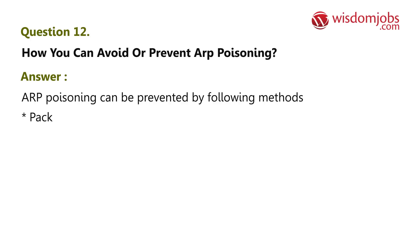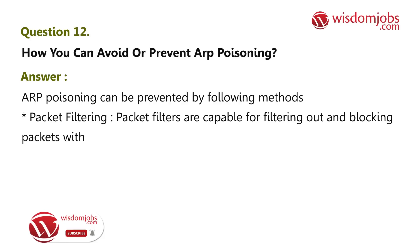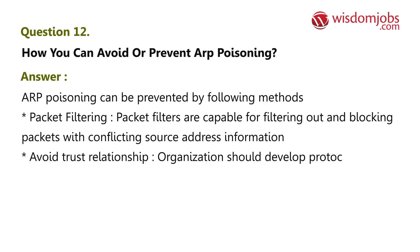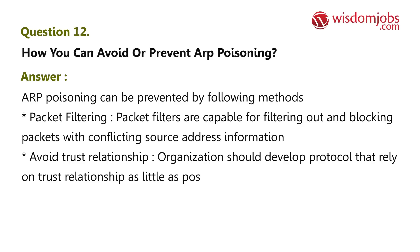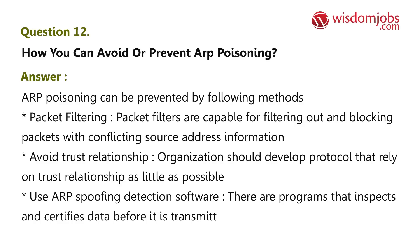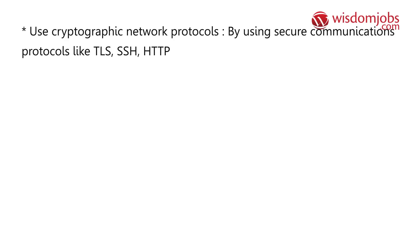Question 12: How can you avoid or prevent ARP poisoning? Answer: ARP poisoning can be prevented by: packet filtering — filtering out and blocking packets with conflicting source address information; avoiding trust relationships — organizations should develop protocols that rely on trust relationships as little as possible; using ARP spoofing detection software that inspects and certifies data before transmission; and using cryptographic network protocols like TLS, SSH, and HTTPS, which prevent ARP spoofing by encrypting data prior to transmission and authenticating data when received.